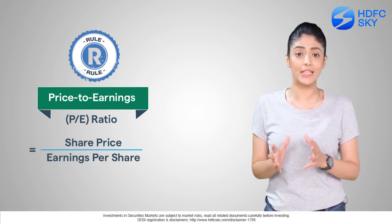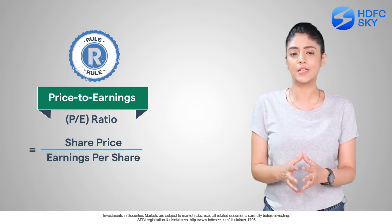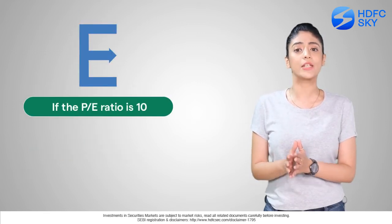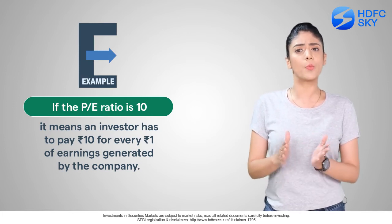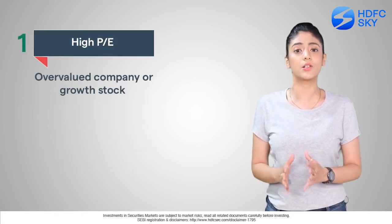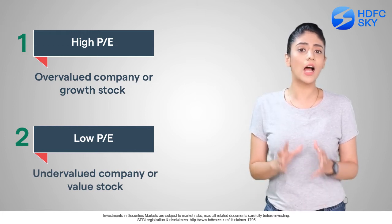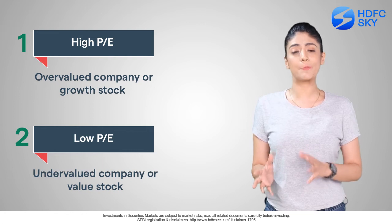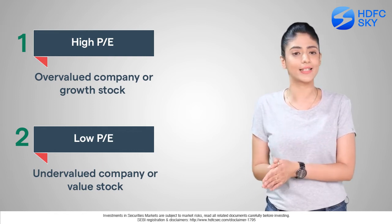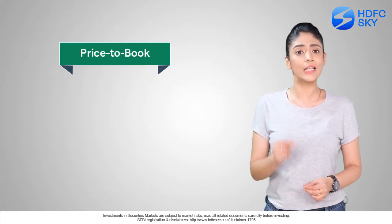Number seven: Price to Earnings, yani PE. Price to Earnings ratio compares a stock's market price to its earnings per share. PE ratio tells us how much an investor has to pay for each rupee of earnings. For example, a PE of 10 means an investor pays 10 rupees for every 1 rupee of earnings. High PE companies are considered overvalued or high growth, while low PE companies are considered undervalued. If a stock's PE is above the industry average, the stock is considered overvalued.